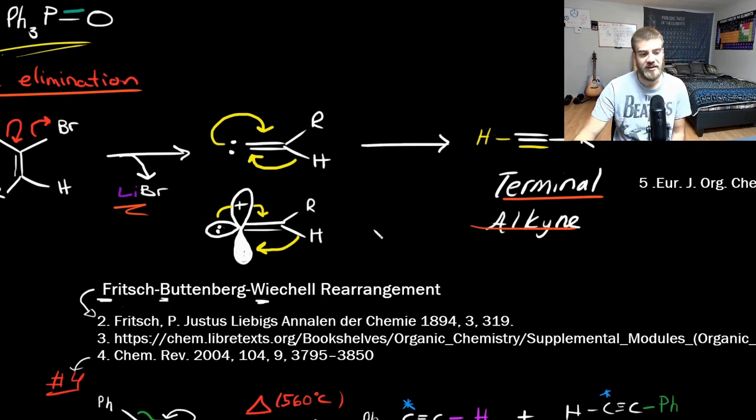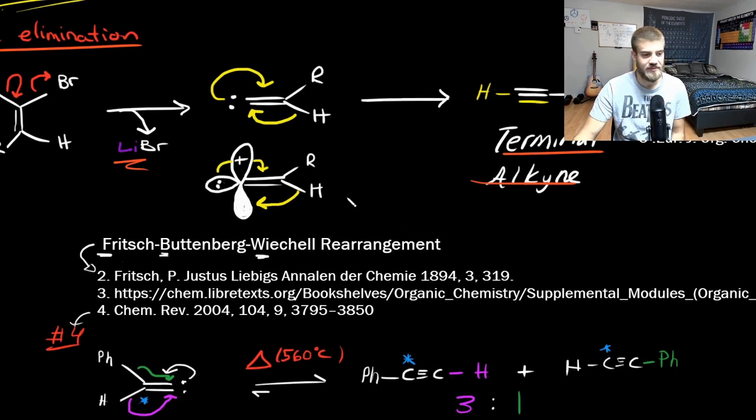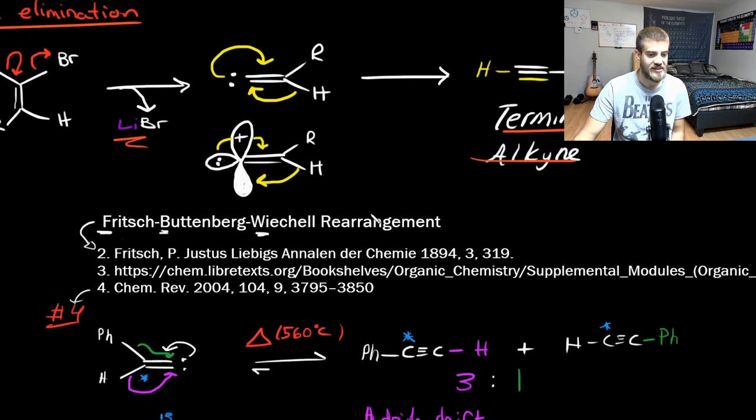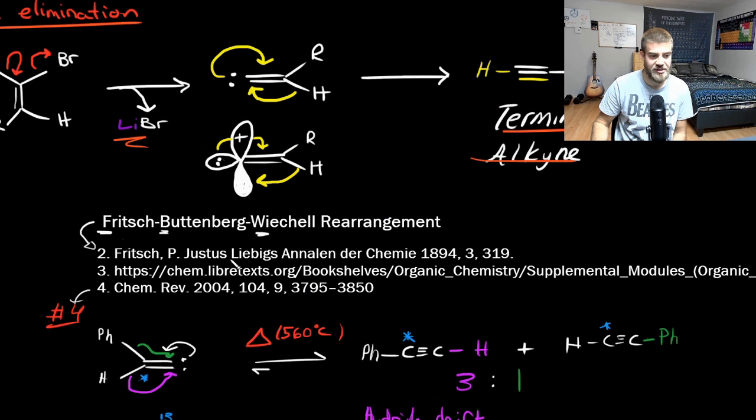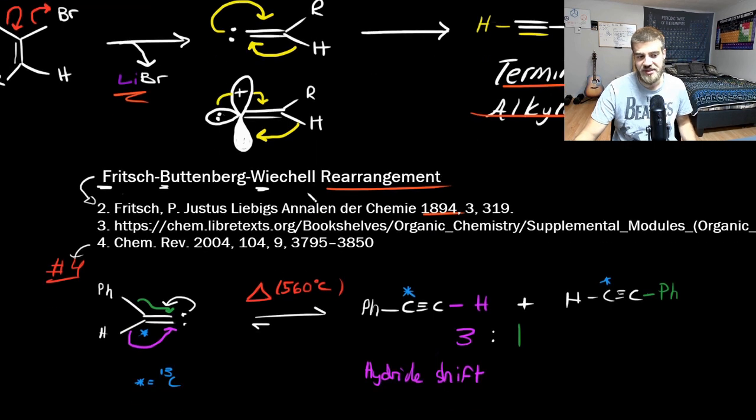And I went and dug up some of the literature on this, and I found those references. And this is called a Fritsch-Buttenberg-Wiechell, sorry for butchering those names, rearrangement. And it's quite documented since 1894. And what actually happens is that the hydrogen migrates, and they studied that very thoroughly.